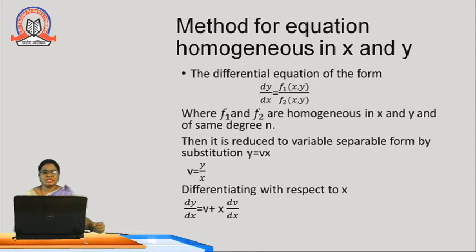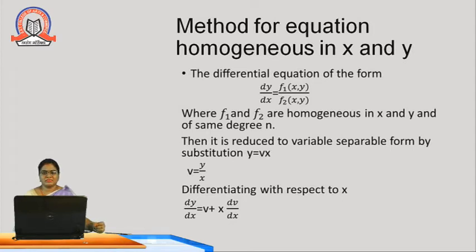Next method: equations which are homogeneous. In a homogeneous equation, the degree of every variable in the equation should be equal. For a differential equation of the form dy/dx equal to f1(x,y) upon f2(x,y), where f1 and f2 are homogeneous in x and y of degree n, we use the substitution y equal to vx to reduce it to separable form. Therefore v equal to y/x, and differentiating y equal to vx gives dy/dx equal to v plus x dv/dx. Using this substitution, we convert the homogeneous equation to separable form, integrate, and find the general solution.